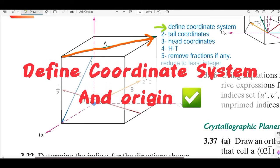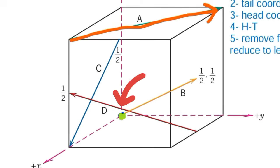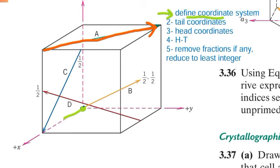The first step is to define the coordinate system. Most of the time, the problem already defines a coordinate system for you, which works well in every case. You can choose any point as your origin. In this problem, the x direction goes along one edge, the y direction along another, and vertically upward is the z direction.